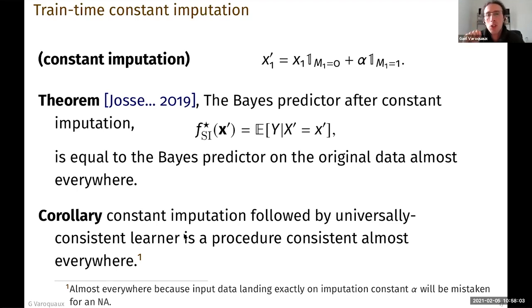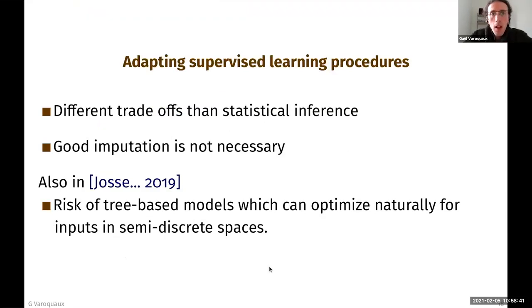And this is an interesting result because it's a strong opposition to the classic missing value practice, which tells you that imputing by constant is disastrous because it will strongly distort your distribution. And the reason why we have this, why we depart from this good practice is because we're interested in different goals and because it's a risk minimization and because we use extremely non-parametric models, which is basically our universally consistent learning.